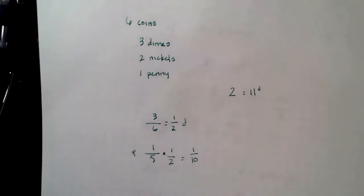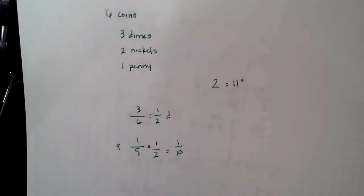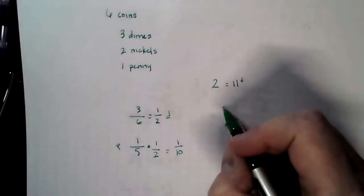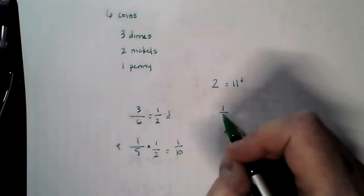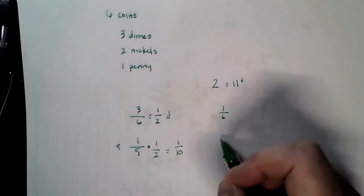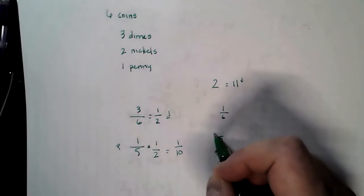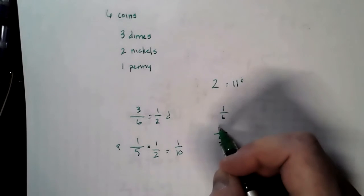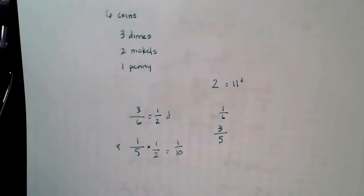Before we go on, I'm going to do it the opposite way. What if we pull the penny first, then the dime? The penny first would be one out of six because there's only one penny to six coins. The dime at that point, again, we've moved the penny. There are five coins left in the bottom of our pocket. There are three dimes. We have a three and five chance of pulling a dime.